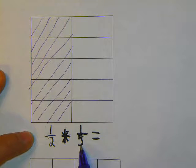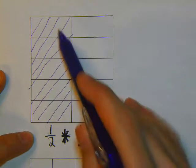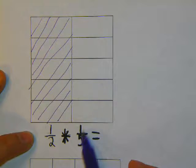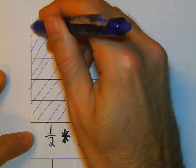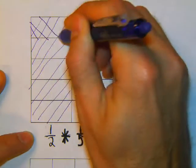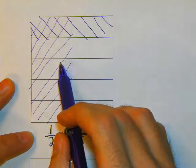Now I'm going to break my box into fifths. 1, 2, 3, 4. Four lines gives me fifths. I'm going to shade in 1 of my fifths, and this time I'm going to make my diagonal lines go the opposite way of my first line.